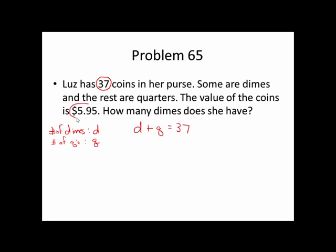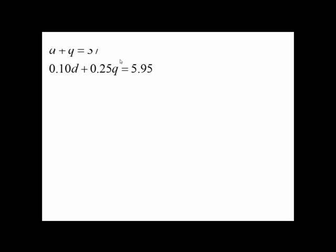The second equation comes from the value of the coins. Each dime is worth 10 cents, so .10D. If we add that to the amount of money in quarters, .25 times Q, we're told that the total value is 5.95. So we have two equations. We can go ahead and solve that. Notice that you could use substitution here because it would be quite easy to isolate D or Q, but I'm going to continue to use the approach of the addition method.